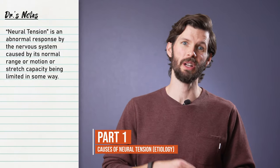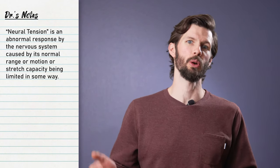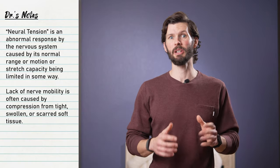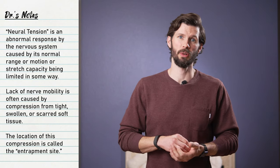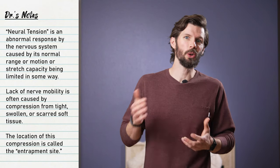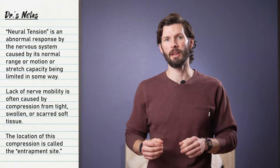Let's start by learning what neural tension is and what causes it in the first place. Neural tension is an abnormal physiological and mechanical response created by the nervous system when its normal range of motion or stretch capacity is limited. Lack of nerve mobility can be caused by compression from tight, swollen, or scarred surrounding tissue, and the location of this compression is sometimes called the entrapment site, which is why neural tension is also sometimes referred to as nerve entrapment.